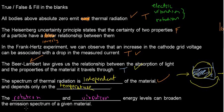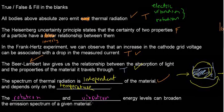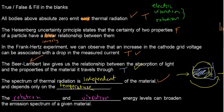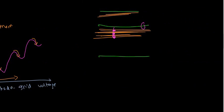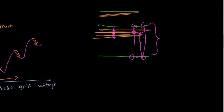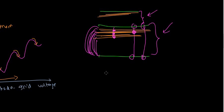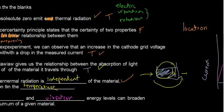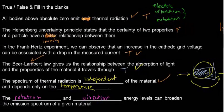Rotation and vibration energy levels can broaden the emission spectrum of a given material. Instead of an electron emitting only one fixed photon energy by dropping directly between electronic levels, it can drop through intermediate rotational/vibrational levels, emitting radiation at a range of energies. This broadens the spectrum so that instead of only discrete lines you get any level in between — as shown on the lecture slides by Professor Attila. Hopefully you found this helpful, and I'll see you in the next video.